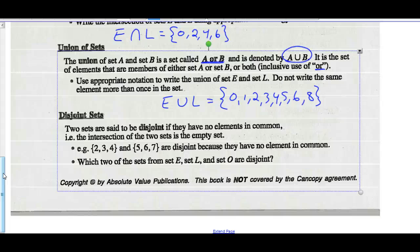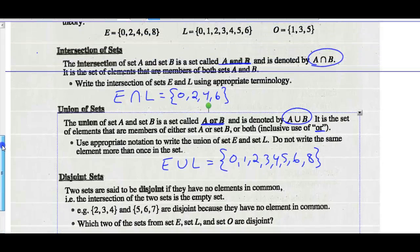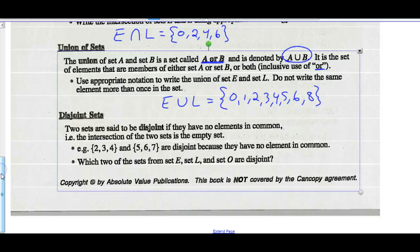Which two of the sets E, L, and O are disjoint? In other words, if we were to intersect them, they have nothing in common. If you look at set E and set O, they have nothing in common. So we would say E intersect O would be the empty set. Therefore, they are disjoint.